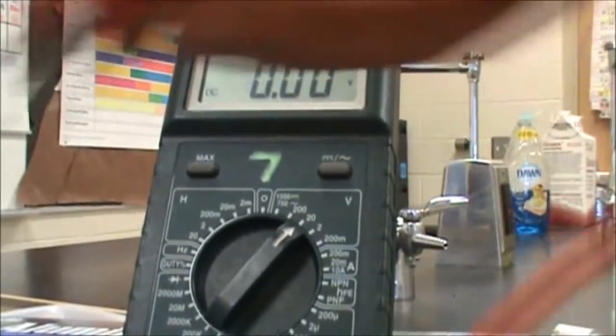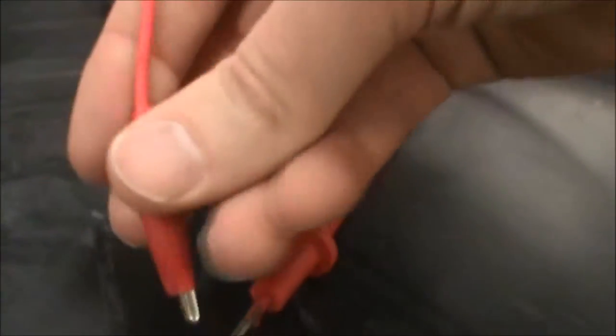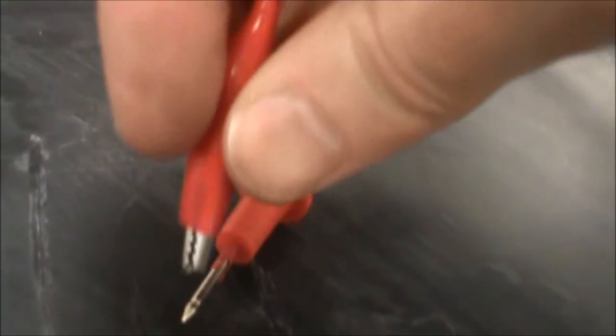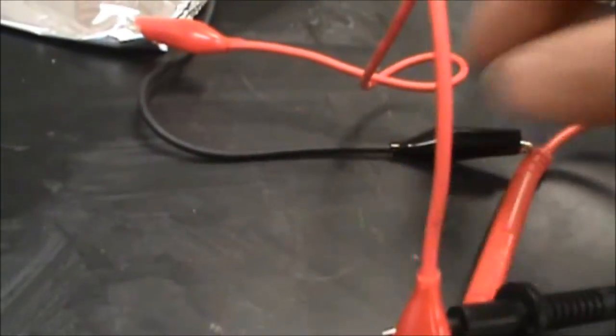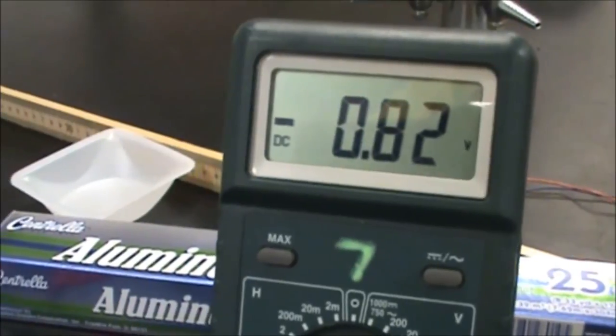Now I'm going to hook this up to our battery from before. When we do that, we get 0.82 volts. That's the voltage running through our battery.